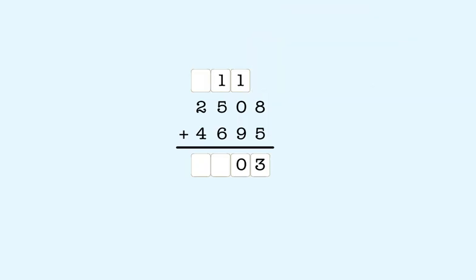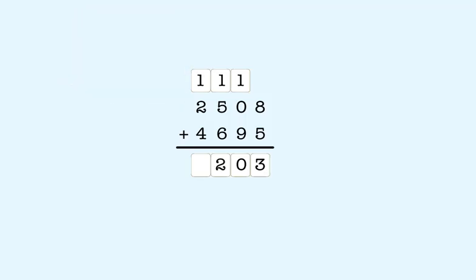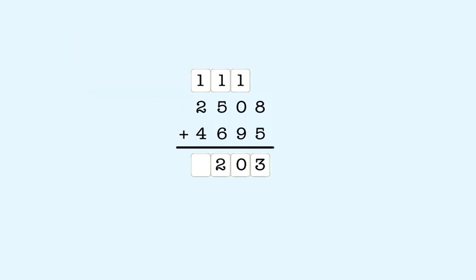Now the hundreds place. One plus five plus six is equal to twelve. So we put a two in the hundreds column and make a ten. And now the thousands place. One plus two plus four is equal to seven. So two thousand five hundred eight plus four thousand six hundred ninety-five is equal to seven thousand two hundred three.